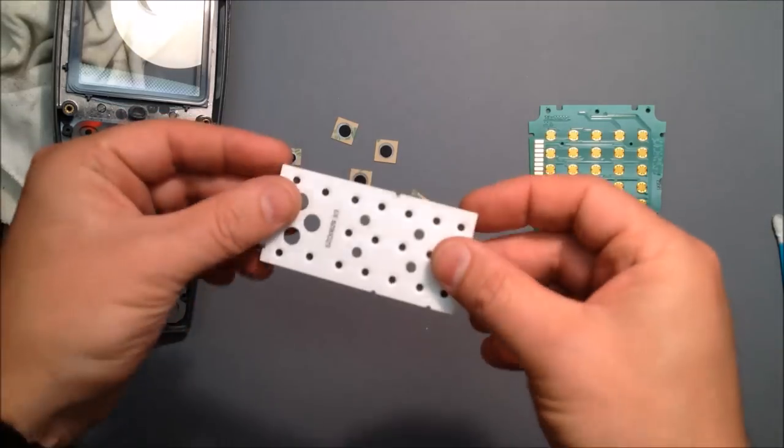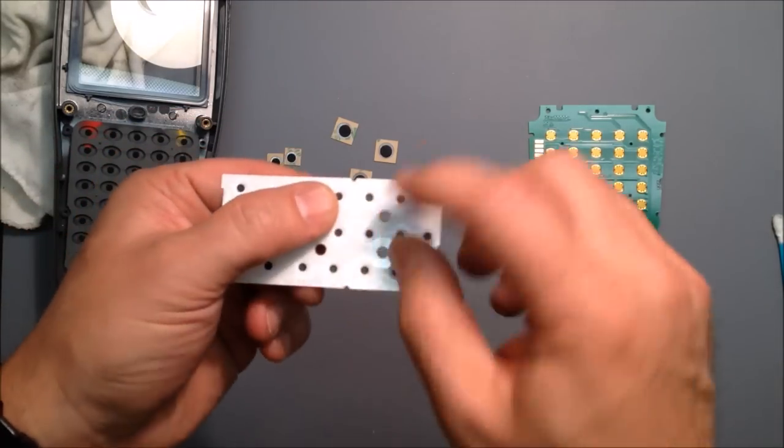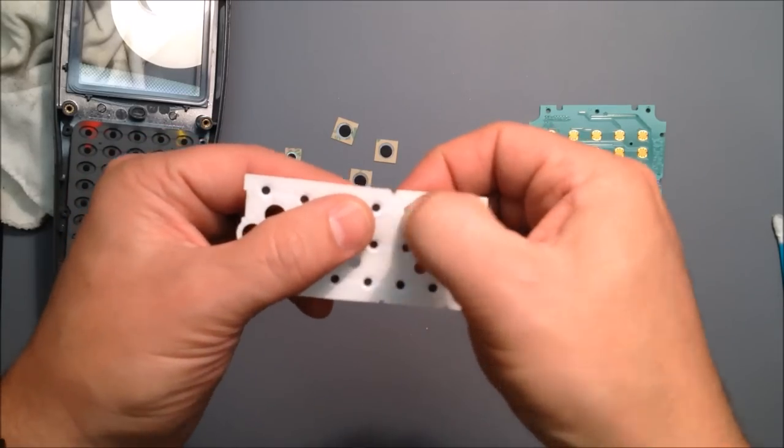There are some snap dome keypads out there with conductive paint. And that can scrape off really easy.